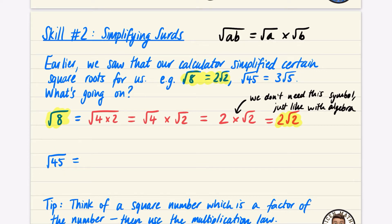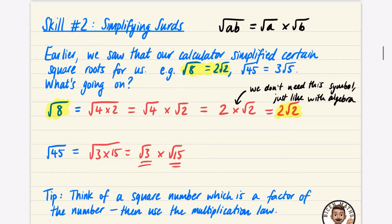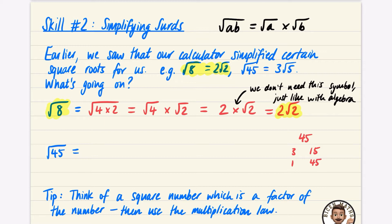Now for 45, we want to get 3√5. You could try 3×15, giving √3 × √15, but neither of those simplify to a nice whole number. The tip says: think of a square number which is a factor of the number, then use the multiplication law. The factors of 45 include 3 and 15, and 1 and 45, but those aren't useful square numbers.